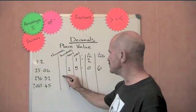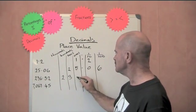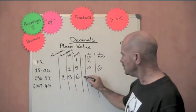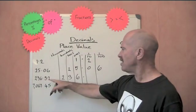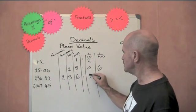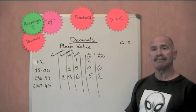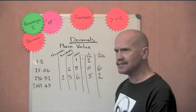236.52. Well, we've got 200. Three tens. Six ones. Decimal point. 5, 2. 5 is the tenths. 2 is the hundredths. Wow. Can you believe it? So easy.